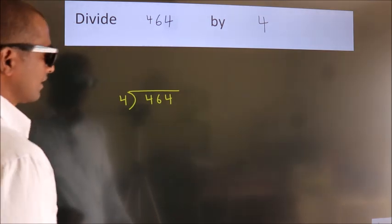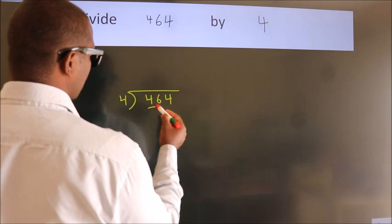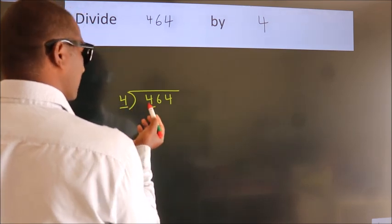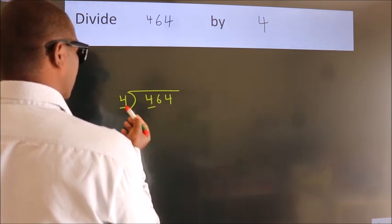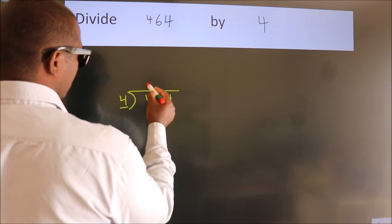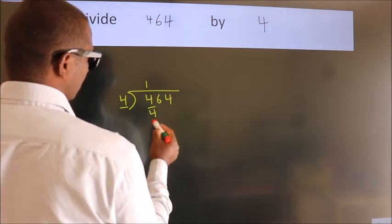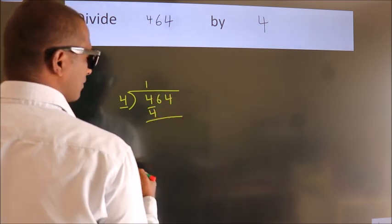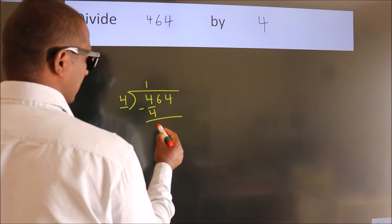Next, here we have 4. Here 4. When do we get 4? In 4 table. 4 once, 4. Now we should subtract. We get 0.